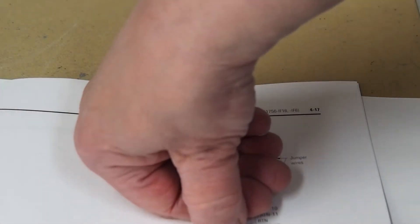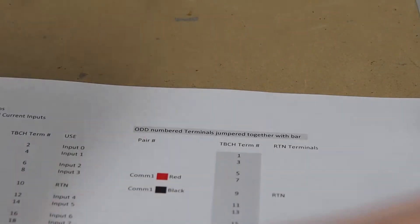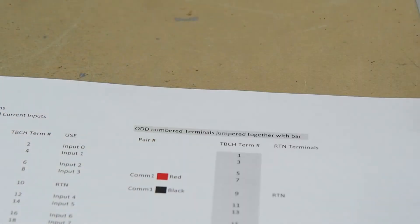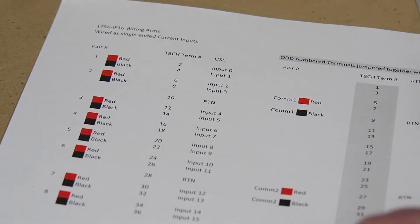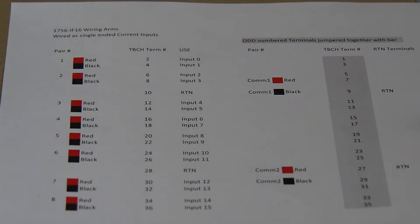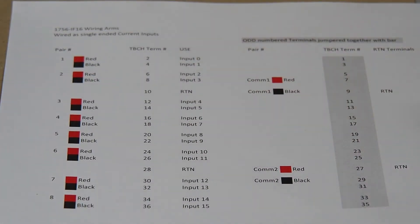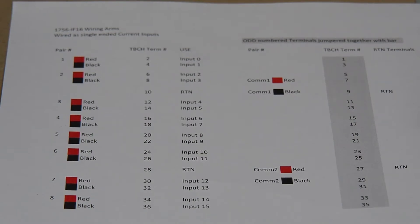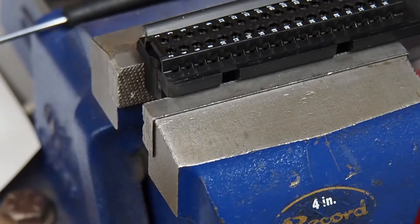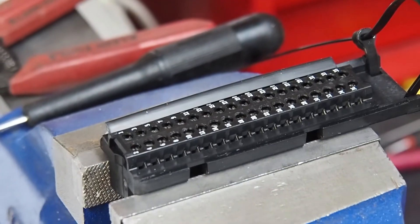These are our inputs here that go from terminal 2 through terminal 36. Move that out of the way. Here is my standard wiring diagram with the color codes that I use. As you can see on here, everything's jumpered and I've got common one, common two.